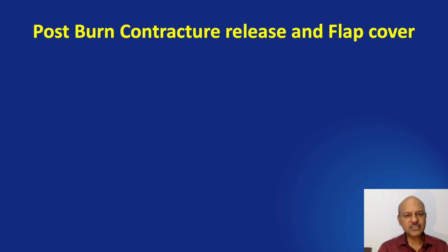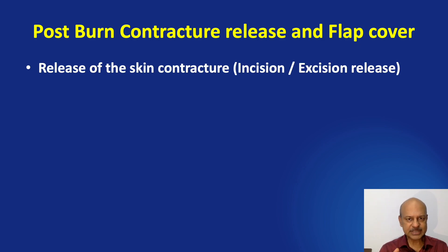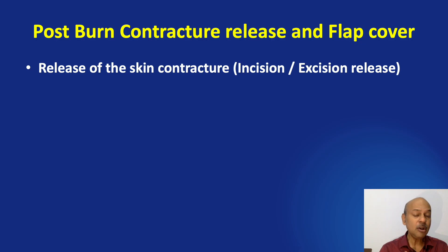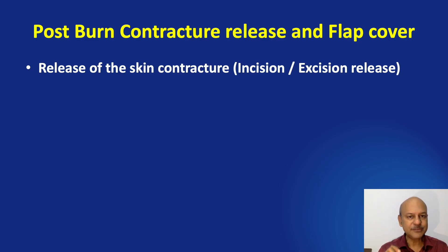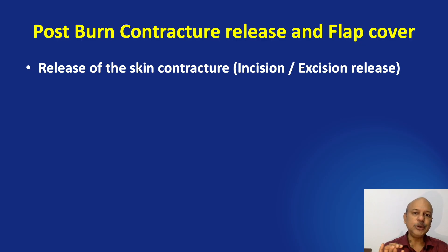Post-burn contracture release and flap cover consists of the following steps. Release of the skin contracture, which can be either incision or excisional release. In the case of children with involvement of the fingers and palm, it is not a large raw area, so you have to do an excisional cover so that the flap gets inset into good skin.